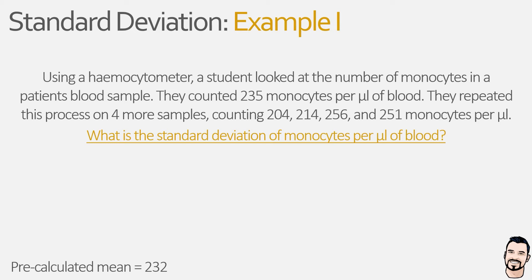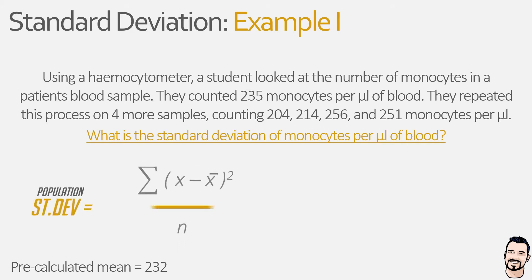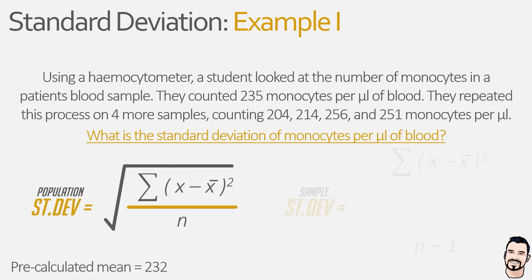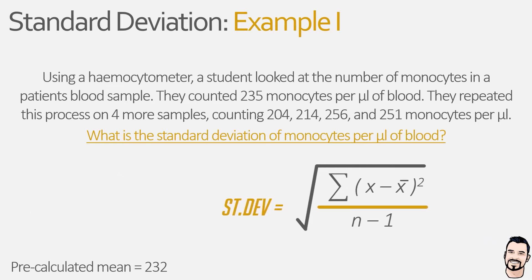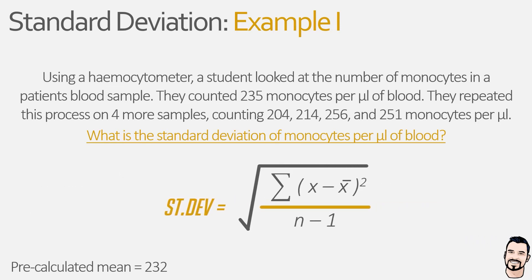Now before we start transferring information into our equation, we need to determine what we are looking at and whether we need to use the equation for population standard deviation or sample standard deviation. In this instance, the student is counting five different samples which come from a larger blood sample. Therefore we are going to select the equation for sample standard deviation, which we can now populate with all of the information from our example.